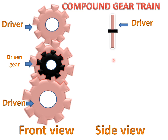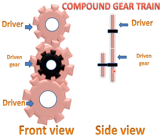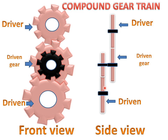If we see the side view of the compound gear train, we can understand easily. This is the larger gear and this is the smaller gear. The small gear is connected to the large gear. These are the drivers — this gear is a driver and this gear is also a driver in this gear train. Now we will see the working of the compound gear train.